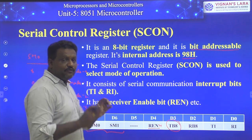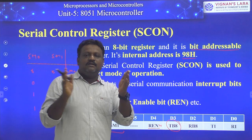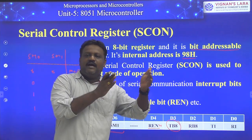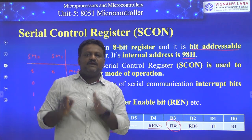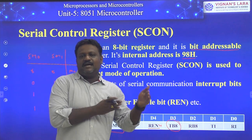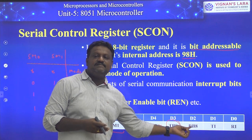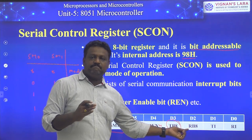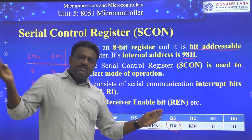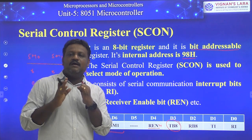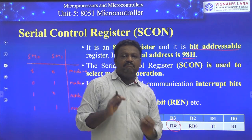To clarify: if we number bits from D0 to D7, those are the 8 data bits. The 9th bit is stored in RB8 when receiving, or TB8 when transmitting. So RB8 is the 9th received bit in Mode 2 and Mode 3 operations of the serial port.